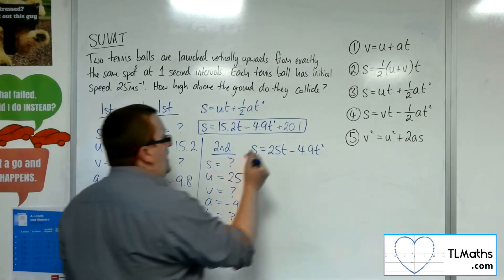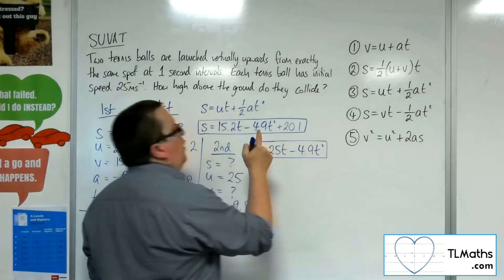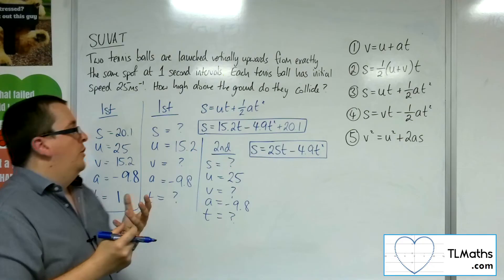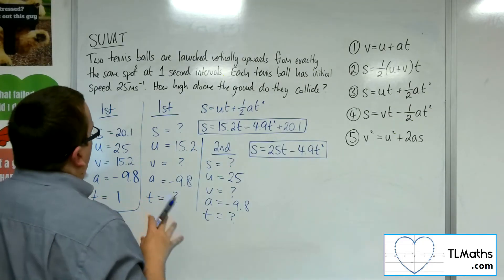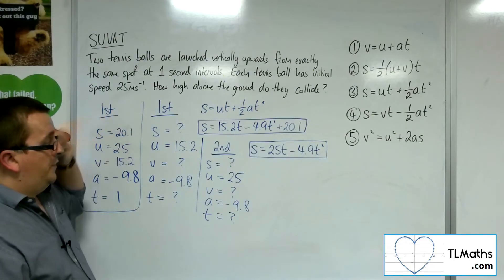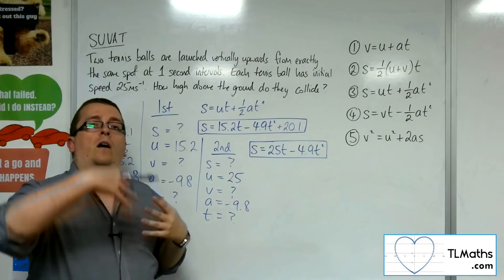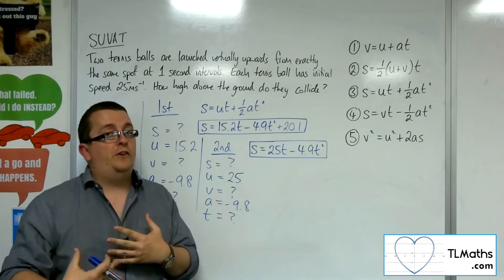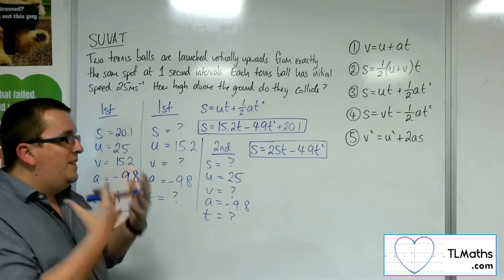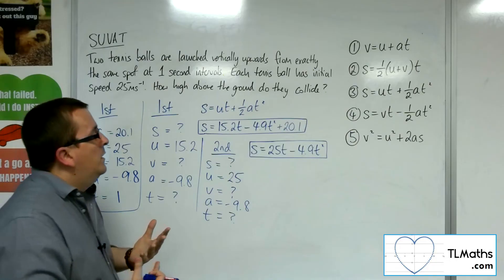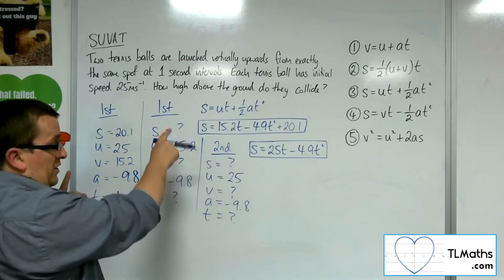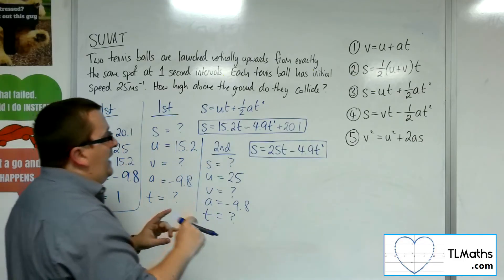So the idea here is that I've now set up two equations where the T is representing exactly the same time. The problem would have been, if I'd started off with the initial equation for the first particle using just T, I'm not taking into account that the T for the first ball and the T for the second ball are different. The T for the first ball is one second behind. So I would have needed to take account of that. Now, however, those T's are the same.